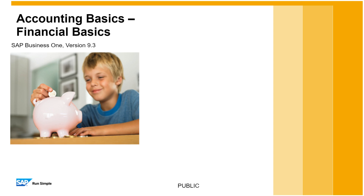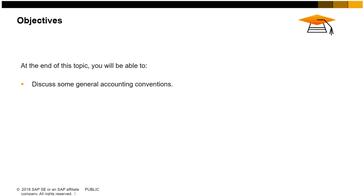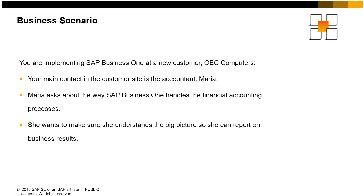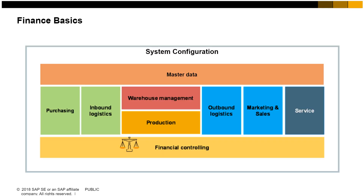Welcome to the Financial Basics topic. In this topic, we will cover some general accounting conventions and give examples of the automatic journal entries that are created during the sales processes. Imagine that you are implementing SAP Business One at a new customer, OEC Computers. Your main contact is the OEC Computers accountant, Maria. Maria is very interested in the implementation and asks you about how SAP Business One handles the financial accounting process. She wants to make sure she understands the big picture so she can report business results to the company owners each period. Let us discuss some financial basics.